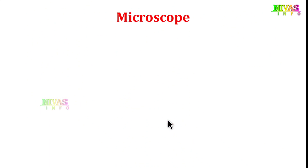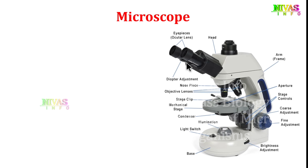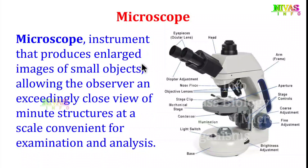The second keyword is microscope. A microscope is an instrument that produces enlarged images of small objects, allowing the observer an exceedingly close view of minute structures at a scale convenient for examination and analysis.